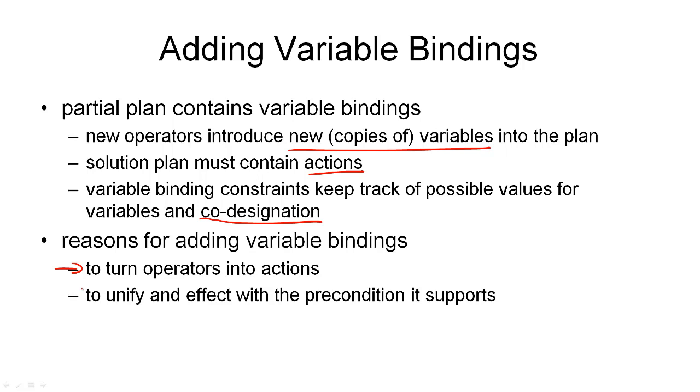In fact, we've already seen that when we introduce a causal link to use an effect to support a precondition, then the effect may have variables, but the preconditions may have specific values in there. So, we need to unify these to make sure that the effect and the precondition match. And that is the second reason for introducing variable binding constraints.